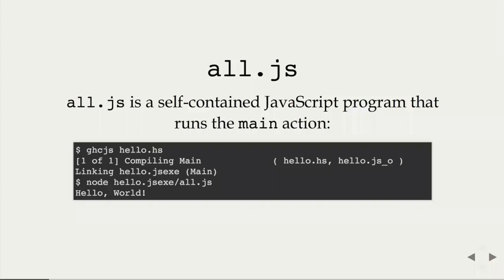So really everything is in there — there's no additional JavaScript sources needed; it's self-contained. But if you run the compiler, you don't just get all.js — you also get a template HTML file, index.html, which includes a few separate files that together concatenate into what's in all.js.